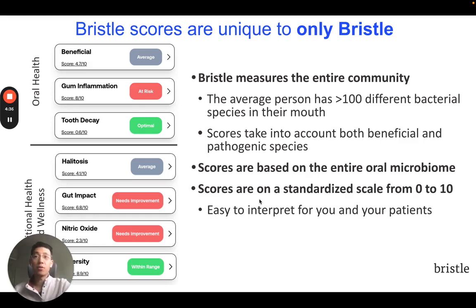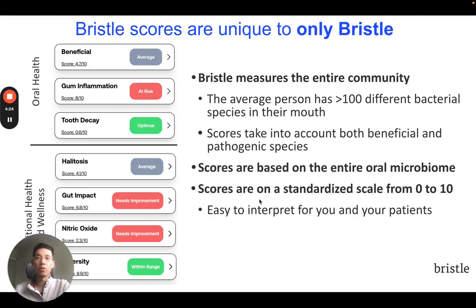The algorithms take into account measurements of dozens of beneficial and pathogenic species, and the Bristle scores are always reported on a standard scale from 0 to 10, with an interpretation that informs you and your patients on where to improve.